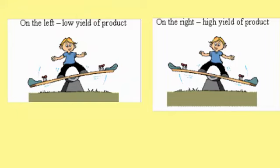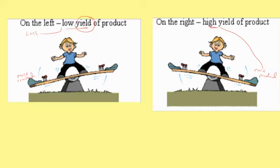A good way of thinking about it is these seesaw pictures. If the position of equilibrium is on the left, that means I've got more reactants than products, and therefore I've got less products, so I'm going to get a low yield. Remember, the yield is the amount of product that we make. If it's on the right, the picture shows more products — the mass of the products is bigger, so the seesaw goes down in that direction — giving a high yield.